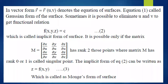In vector form, r = r(u, v) denotes the equation of surfaces. If we choose position vector r, which is ordinarily a function of x, y, and z, in new coordinates r becomes a function of u and v only: r = r(u, v) denotes the equation of surfaces.